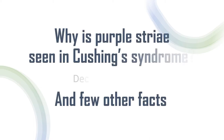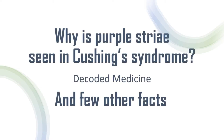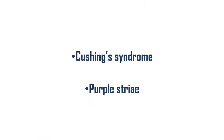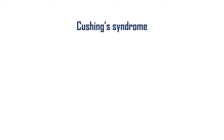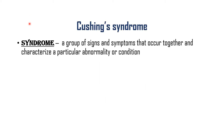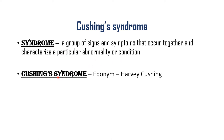Why is purple striae seen in Cushing's syndrome? To answer this question, one needs to understand what is Cushing's syndrome, what is purple striae, and then know the link between the two. The term 'syndrome' means a group of signs and symptoms that occur together and characterize a particular abnormality or condition.